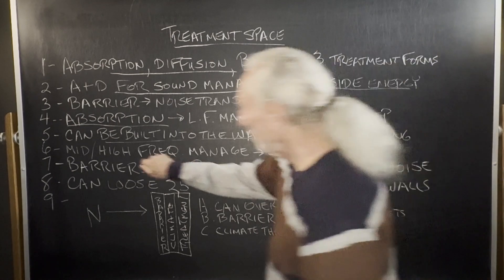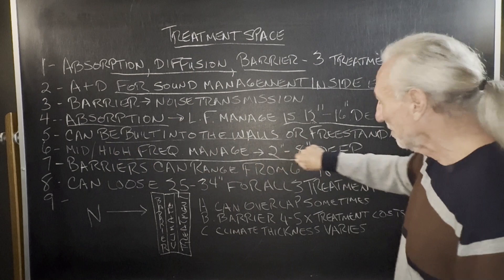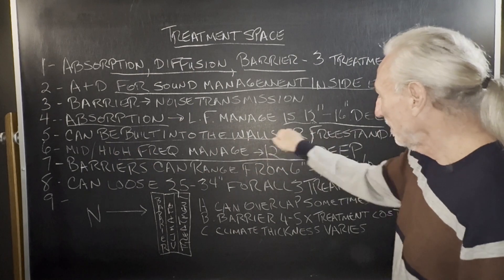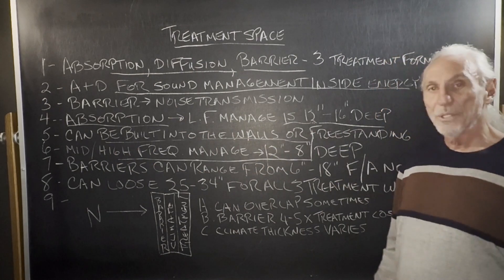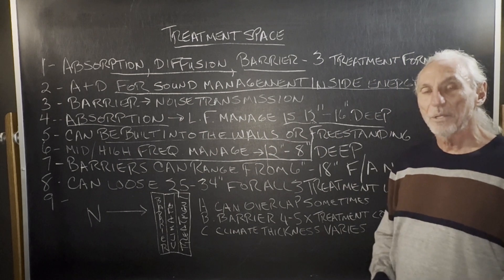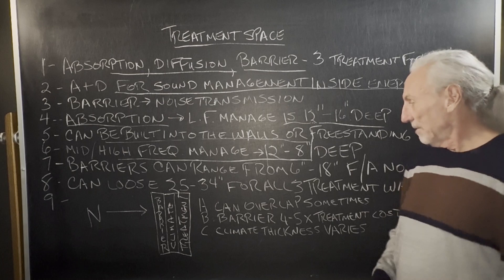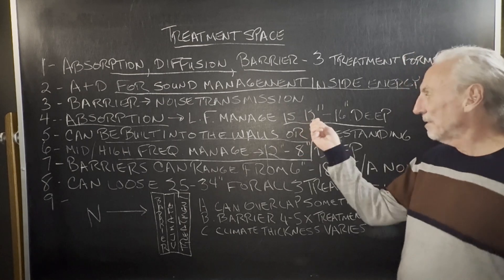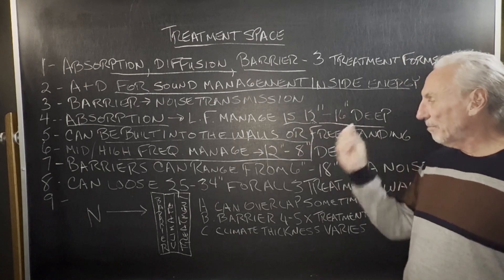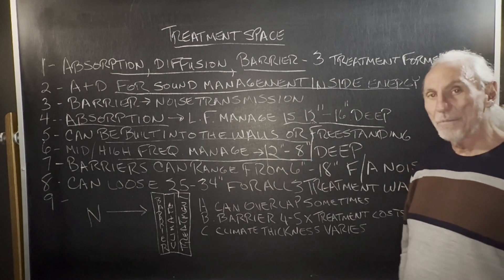So middle and high frequency management doesn't take as much space, but it still takes space, two inches to eight inches, depending on what you're doing, depending on the usage. So you have to keep these distances in mind, 12, 16 low frequency, two to eight for mids and highs.